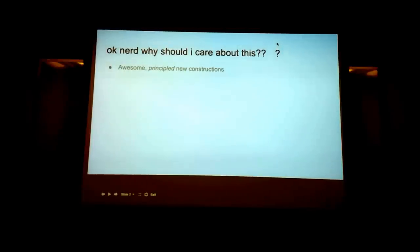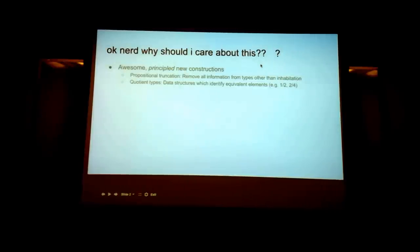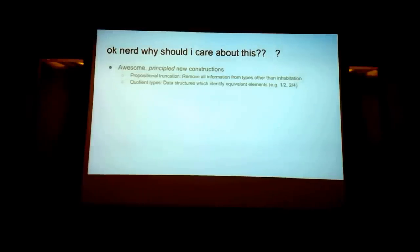It brings a lot to the table. There are several principled new constructions, such as propositional truncation, which basically converts any type into a logical proposition. Quotient types, which are data structures that identify equivalent elements. For example, fractions like 1 over 2 and 2 over 4 — there's no reason why they shouldn't be treated the exact same.